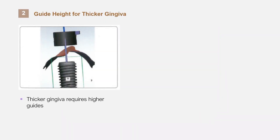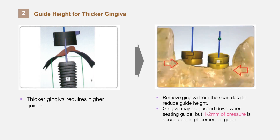Thicker gingiva requires higher guides and higher offsets. In this case, the application of a higher offset is difficult if the patient has a small mouth. If only about one millimeter needs to be lowered, there is a method to lower the height of the guide by purposely cutting a portion of the gingiva in the scanned data. The gingiva can be pressed down when seating the guide. The pressure of about one millimeter does not affect the guide's accuracy, but it is best to check the offset under CT before proceeding with the surgery.